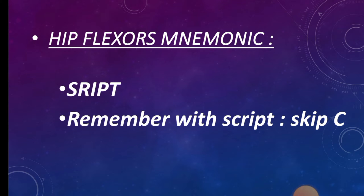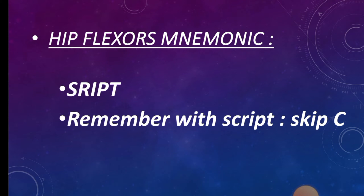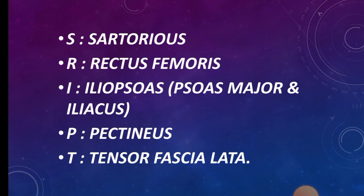Starting with hip flexors. The mnemonic for hip flexors is SCRIPT — but skip the C. S for sartorius, R for rectus femoris, I for iliopsoas (iliacus with psoas major), P for pectineus, and T for tensor fasciae latae.